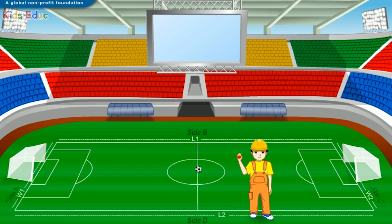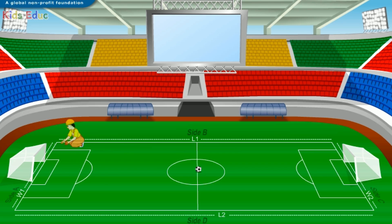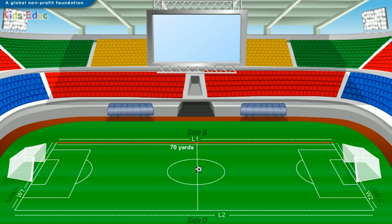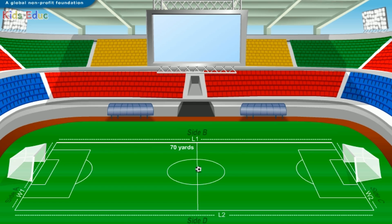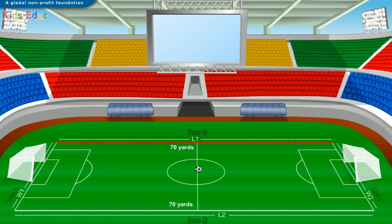Now, let's calculate the perimeter of the soccer field. You can use my magical ruler for this. Let's measure the length of one side of the field. As you can see, the length of side B is 70 yards. Since the two sides of a rectangle are equal, the length of side D is also 70 yards.